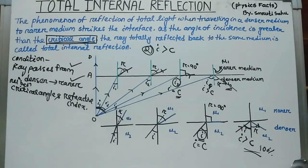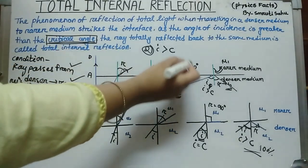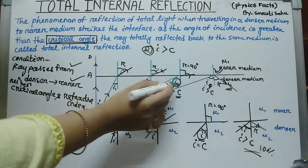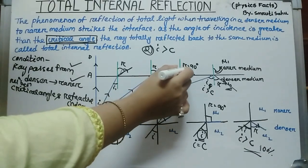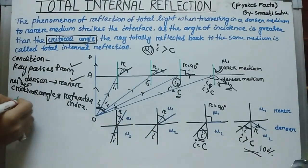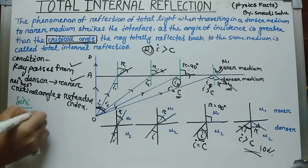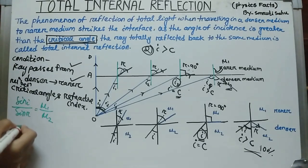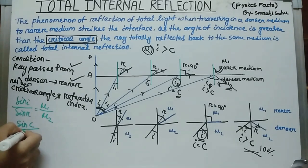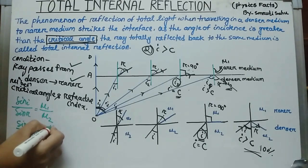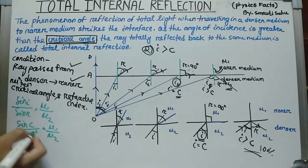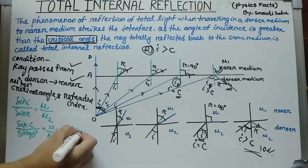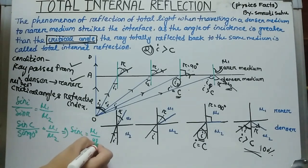Now we discuss the relation between critical angle and refractive index. Using Snell's law: sin i / sin r = mu1 / mu2. Here sin i equals sin c (critical angle) and sin r equals sin 90 degrees, which equals mu1 / mu2. Since sin 90 = 1, we get sin c = mu1 / mu2.